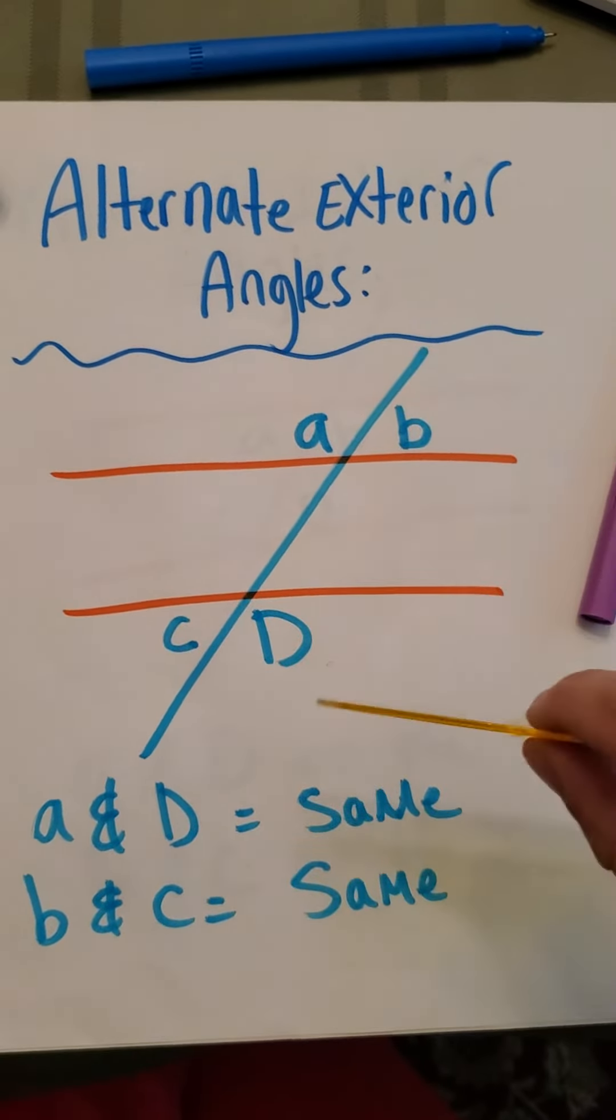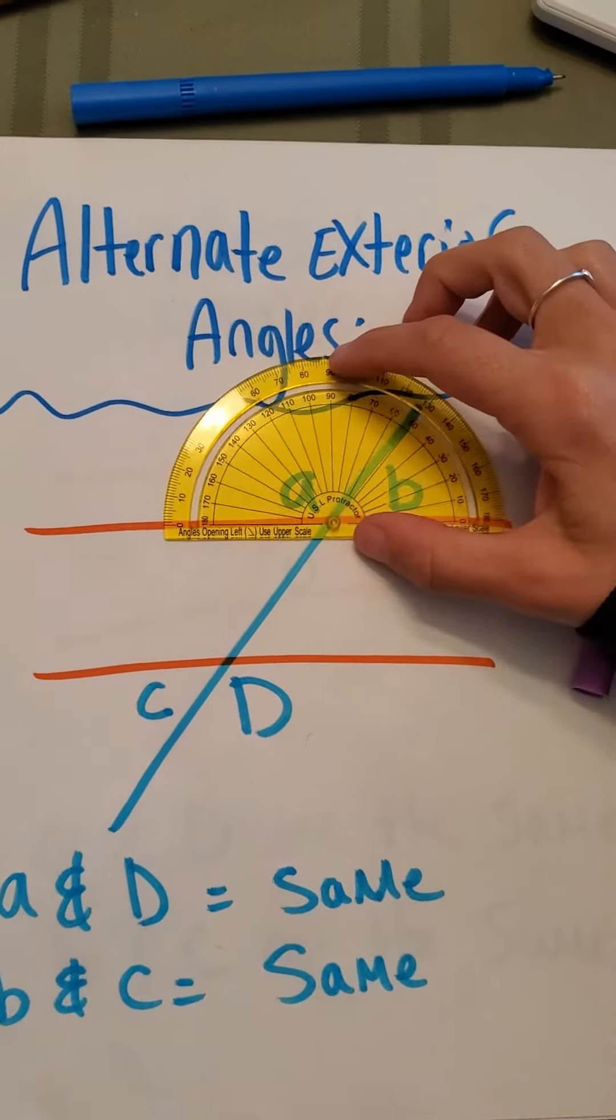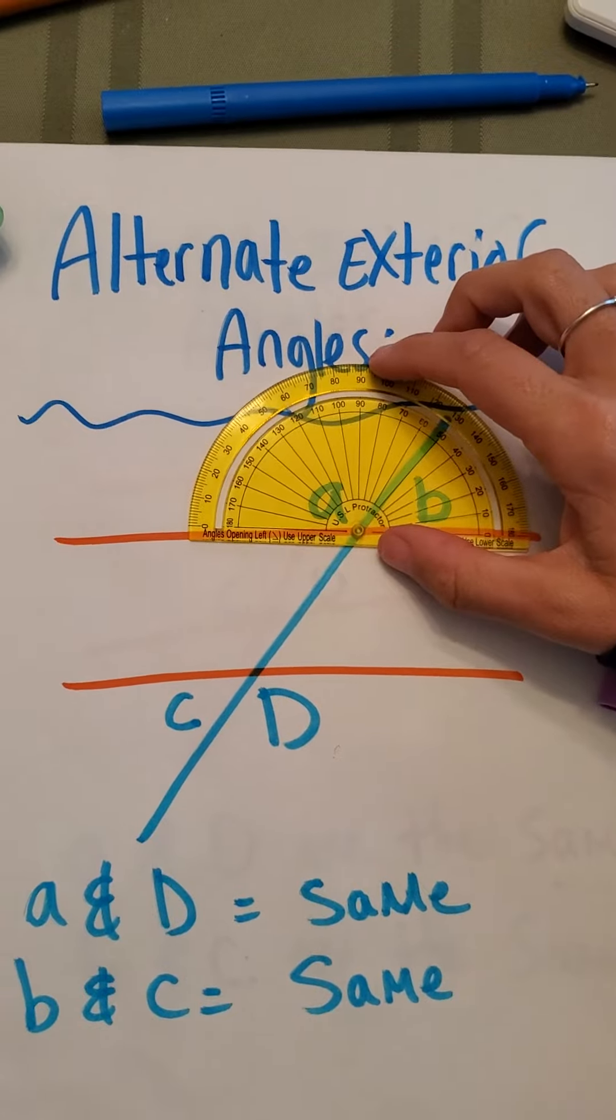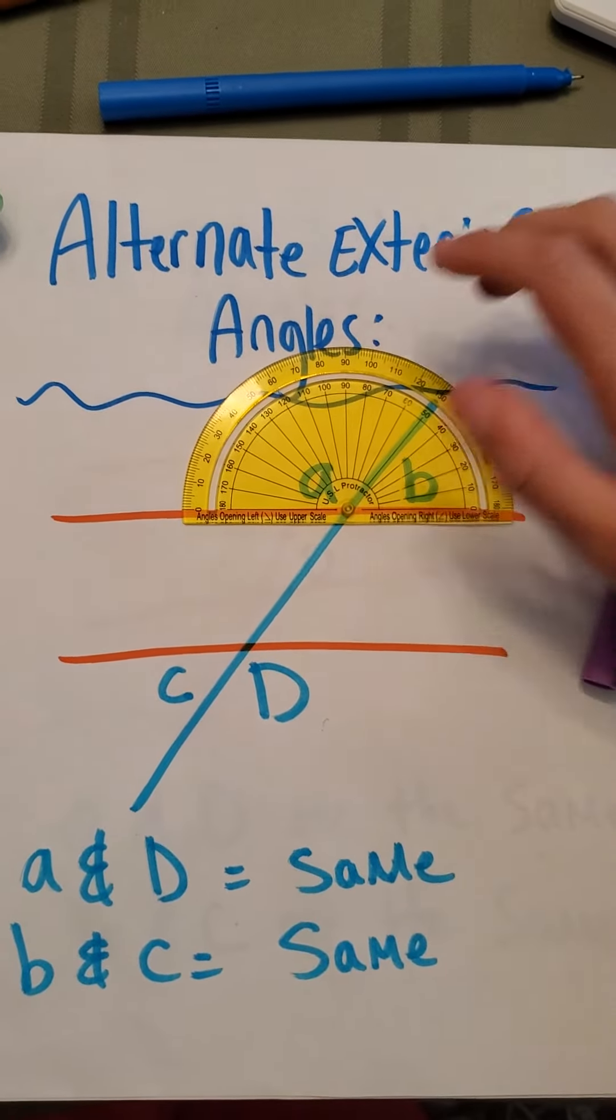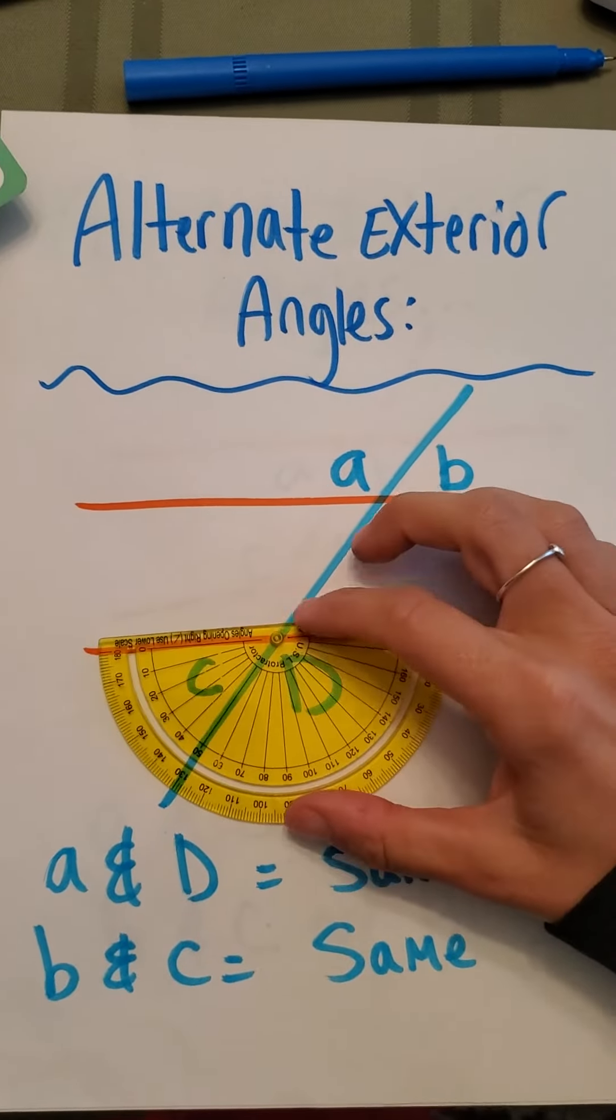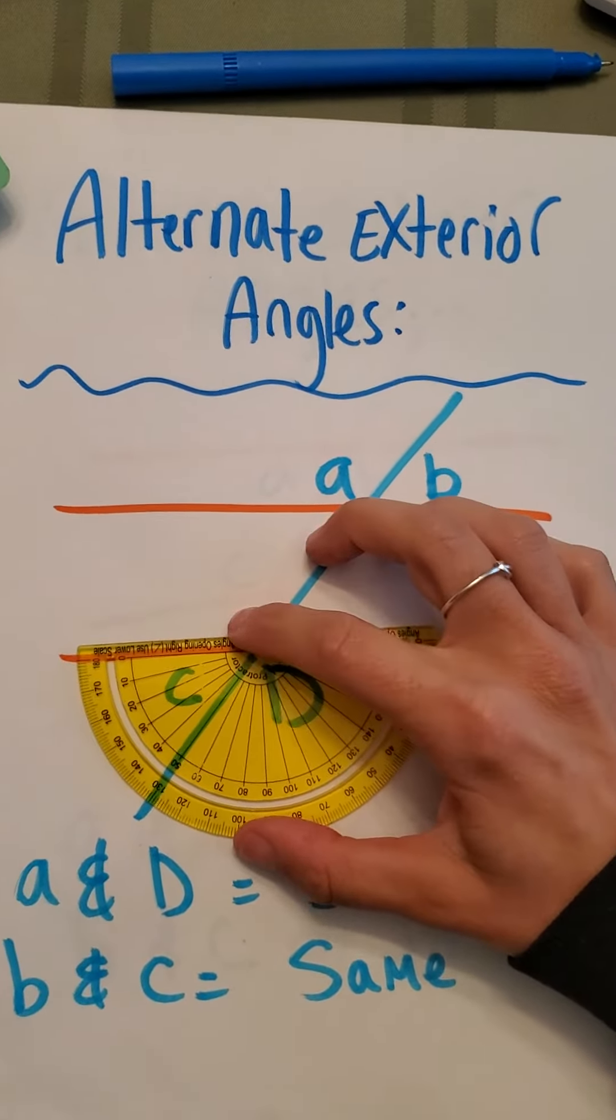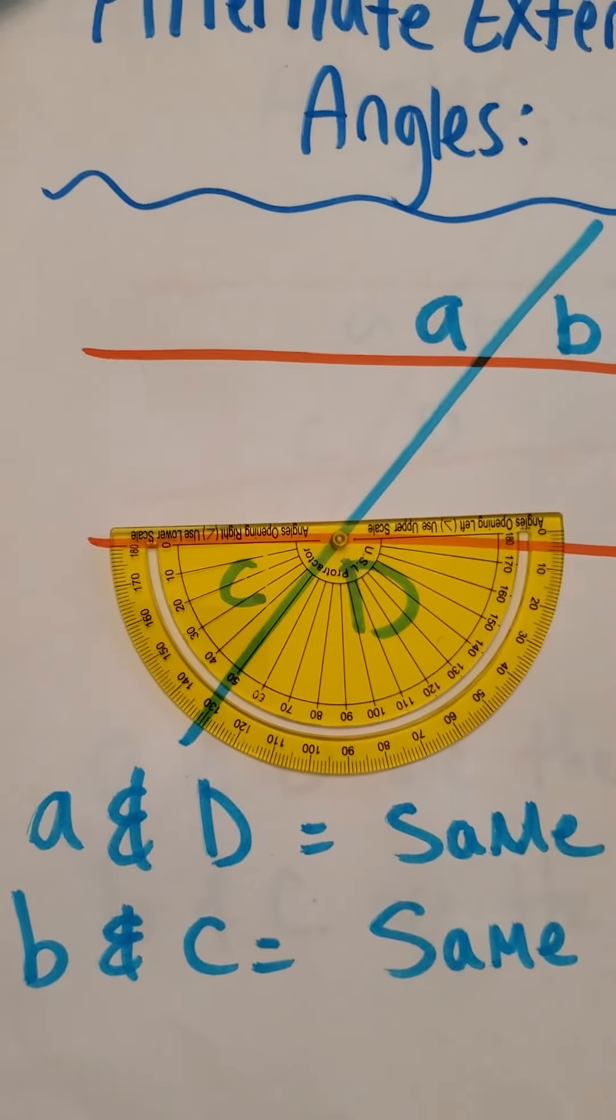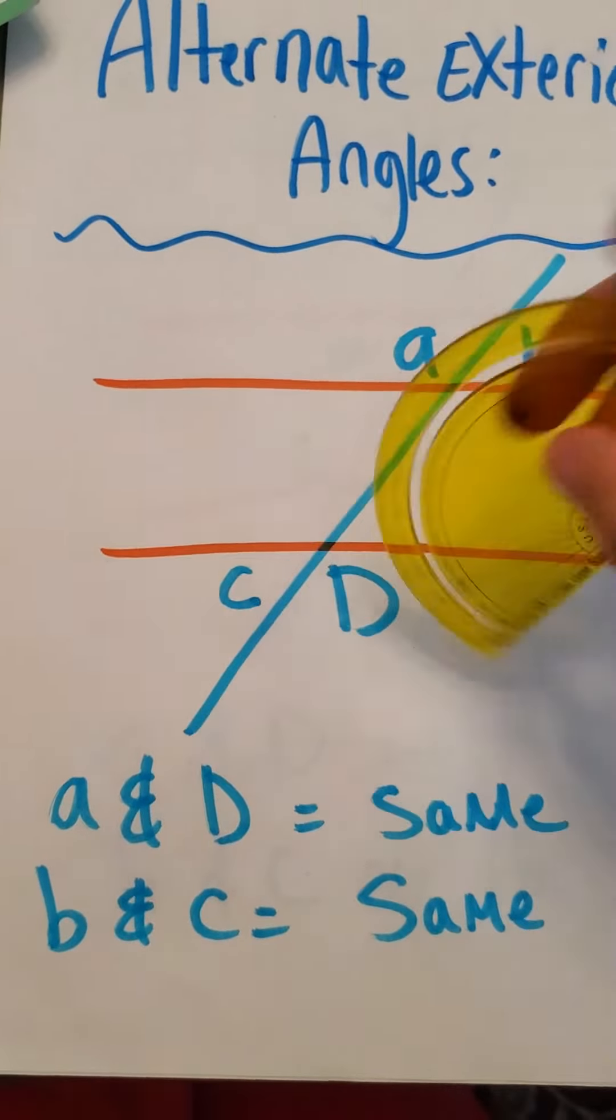And let's prove it with our protractor. Okay. So here we go again. This one, A, is about 130 degrees. Therefore, we can determine that D is going to be the same, about 130 degrees. And there you have it. They are. Look at that.